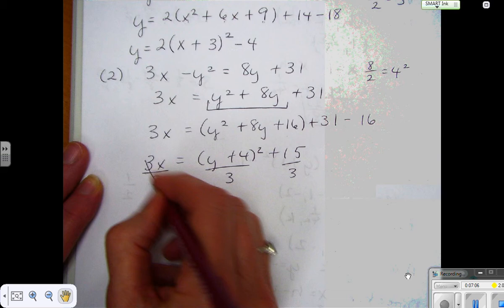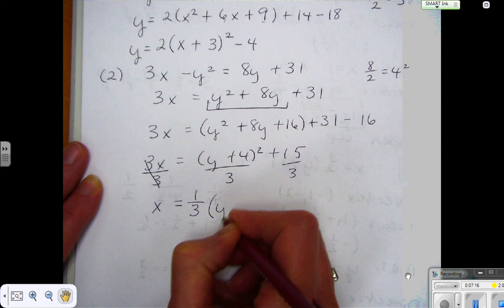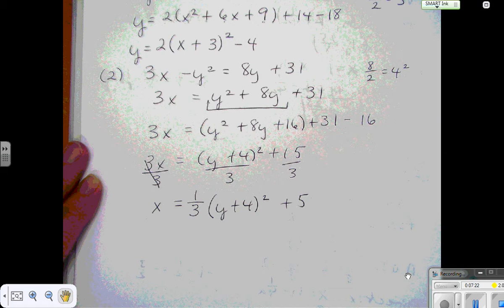Now instead of writing this as a binomial over a number, I'm going to pull the fraction out, make it one-third, because that's what your a is, is that one-third. Okay, and there you have it in standard form. Any questions?